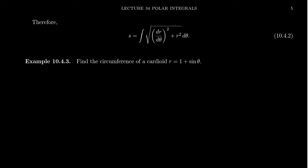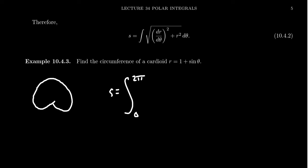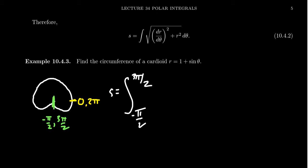To find the circumference of a cardioid — that lima bean-like shape — we want to find how far around it is once. To get the circumference, we integrate over one full rotation. Rather than 0 to 2pi, I want to go from negative pi halves to 3 pi halves. This leads to a slightly easier integral because of symmetry, which I'll explain in a moment.